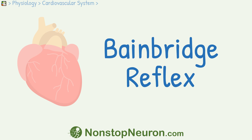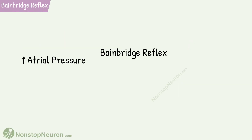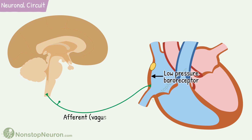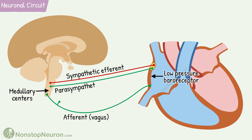In this video we will talk about the Bainbridge reflex. In this reflex, an increase in atrial pressure increases heart rate. The neuronal circuit involved includes low pressure baroreceptors seen in the atria, afferent fibers in the vagus nerve, medullary control centers, and efferent fibers in sympathetic and parasympathetic nerves.